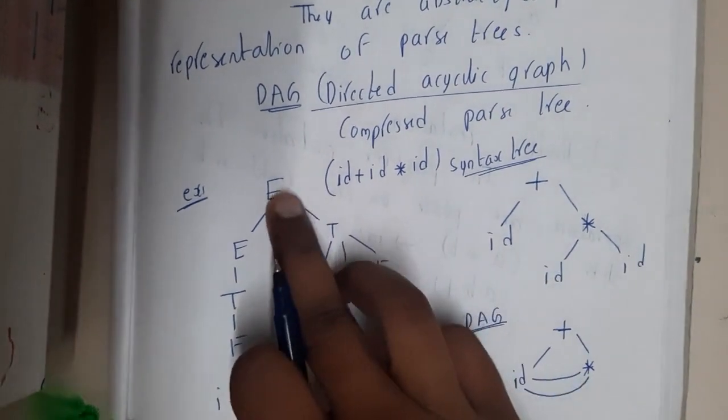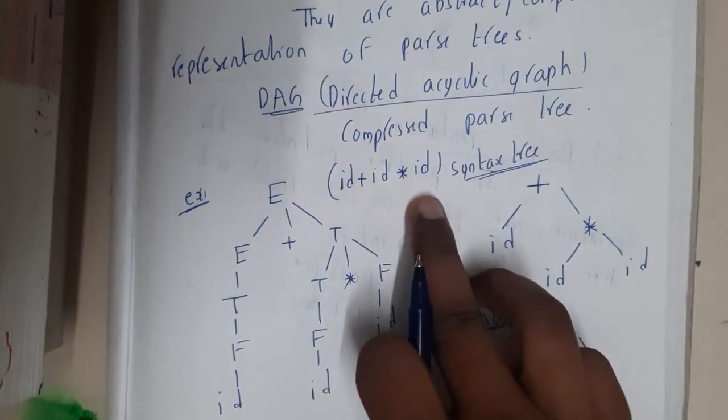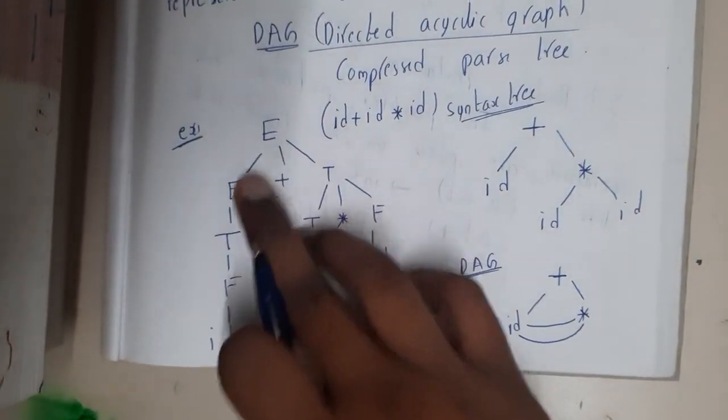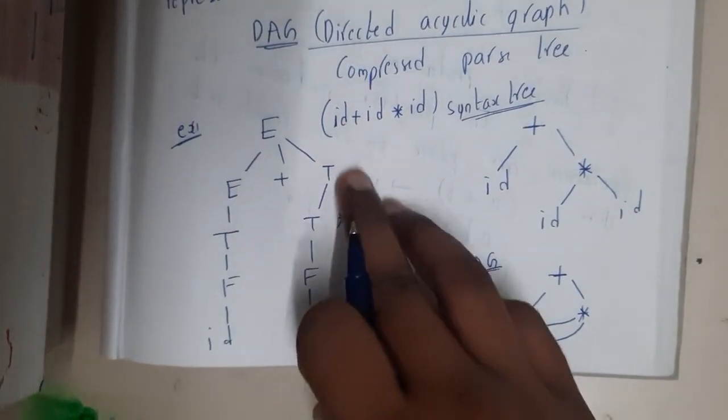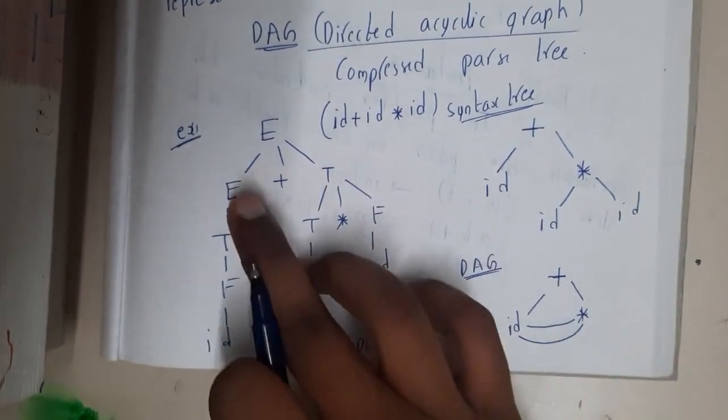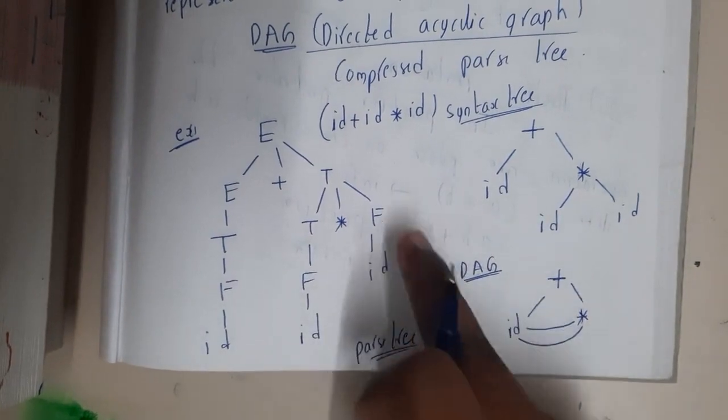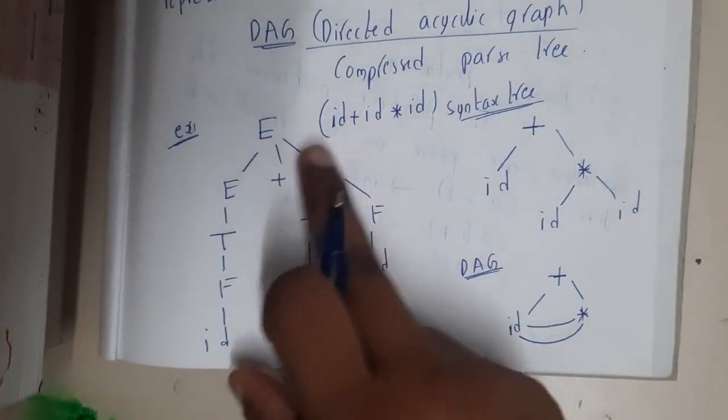If you observe here, id plus id into id, assume the given grammar is a standard grammar: E implies E plus T, and T implies T into F, E implies T, and T implies F, and F implies id. This is the standard grammar which we'll be using.